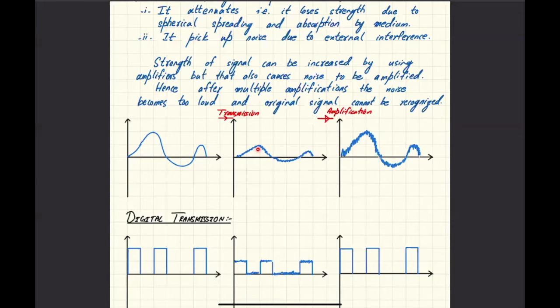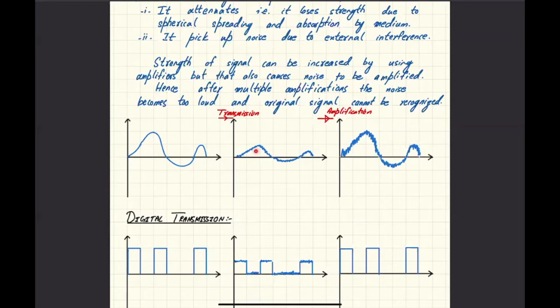There would be different reasons in different situations. For instance, if you're sending a signal through copper wire, then some heat energy losses would be there inside the copper wire, and hence the power of the signal would reduce.